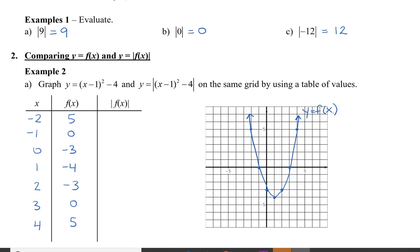Now I'm going to graph the absolute value. To graph the absolute value, the entire function has absolute values around it. Looking at the table of values with the absolute value symbol around f of x, I'm taking the absolute values of the y values: absolute value of 5 is 5, 0 is 0, absolute value of negative 3 is 3, 4, and so on. I'll graph these points on the same grid and connect them.